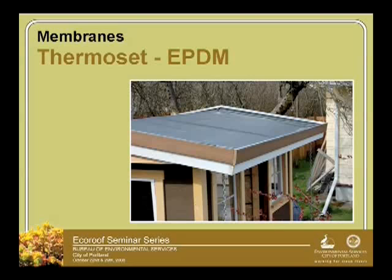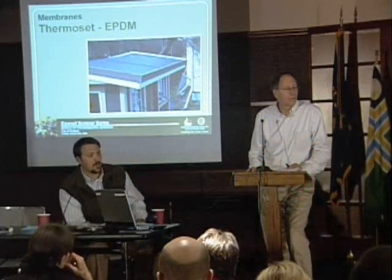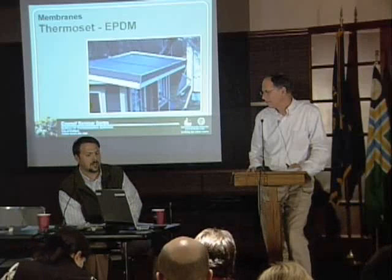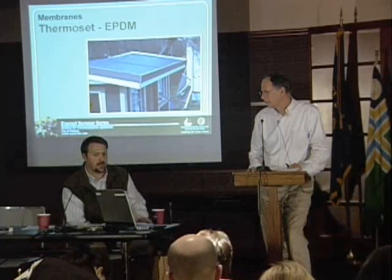That's an EPDM pond liner that came in a 15-foot roll, pretty much any length. For my purposes, it was 15 by 12 feet, so they pulled it off the roll and cut it. It was about $100 — less than a dollar a square foot — and I was able to have a seamless membrane for this roof. The thickness was about 40 to 42 mil on this one. They make 60 mil, which is very common for typical roofing, but this one happened to be a little thinner and lighter.